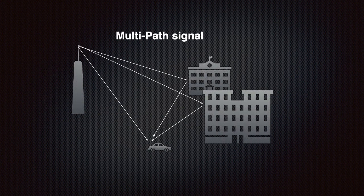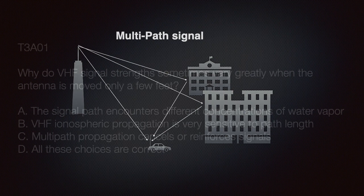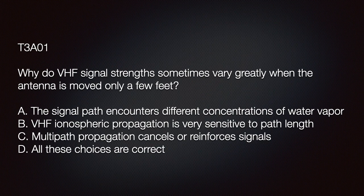After a radio wave leaves the antenna, it travels in a straight line just like light does. As a result, it can be reflected off some objects and absorbed by others. A problem arises when the same signal is received from multiple paths — some signals take slightly longer to arrive at the receiving antenna, and as a result they either cancel out or reinforce and strengthen the other signals.